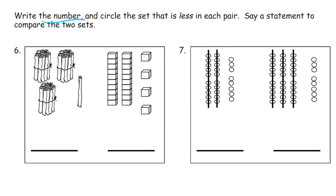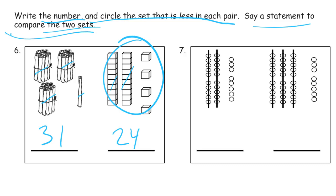Now we're writing the number. Circle the set that is less in each pair and say a statement out loud to compare the two sets. So this has 10, 20, 30, 3 tens and a single one. And this is 2 tens and 4 ones. 31. Remember this is less than in each pair, so 24 is less than 31. Or it says a statement to compare the two sets, I could also say 31 is greater than 24. As long as it compares the two sets, either way will be fine.